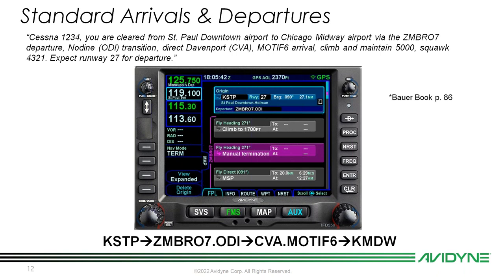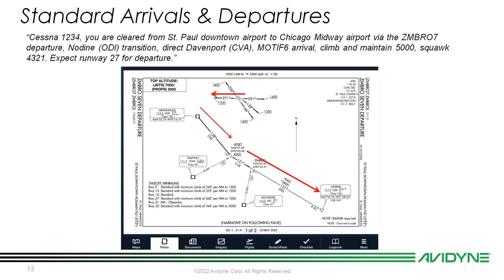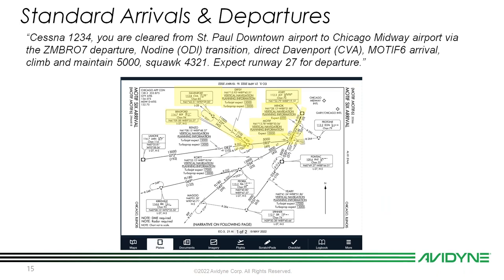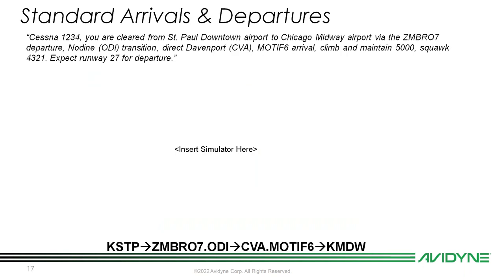We'll first review the charts. The Zimbro 7 departure has you flying 271 off runway 27, then vectors to Minneapolis VOR (MSP), down to Jettit, Zimbro, and the Nodine VOR. For the arrival, the Motif 6 takes you from Davenport to Bradford VOR and up to Joliet (JOT) into Chicago Midway.